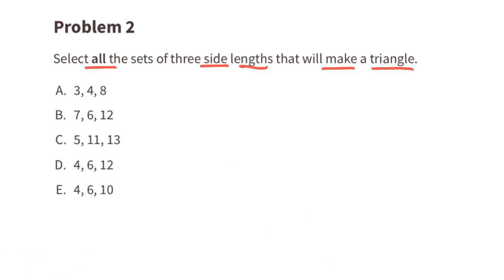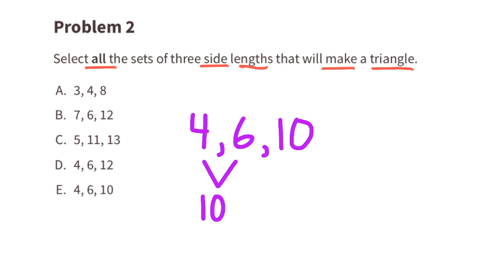For set E with side lengths 4, 6, and 10: 10 is the largest side length, so 4 plus 6 needs to be greater than 10. Since 4 plus 6 equals 10 — not greater than 10 — the side lengths for E will not form a triangle.